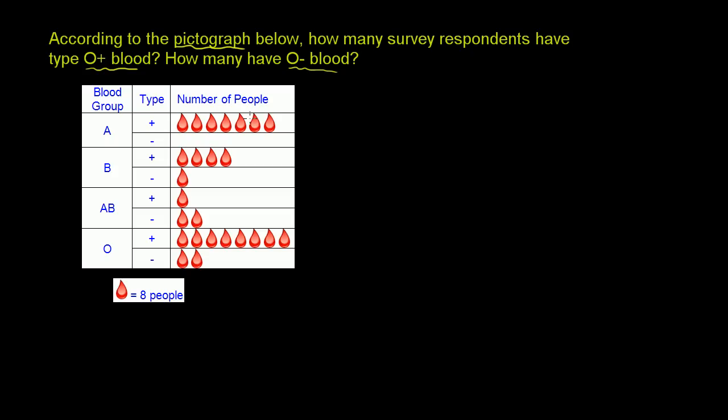So a pictograph is really just a way of representing data with pictures that are somehow related to the data. In this case, they give us little pictures of, I'm assuming, blood drops right over here.